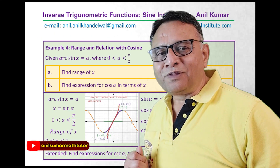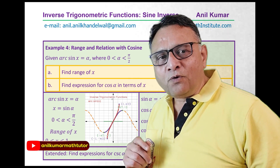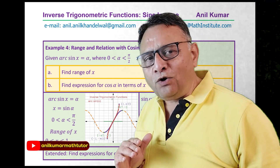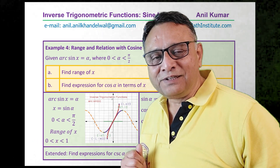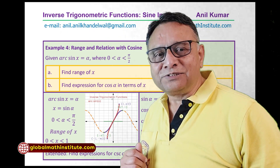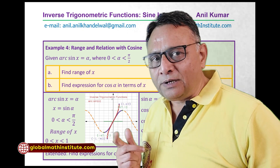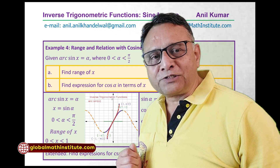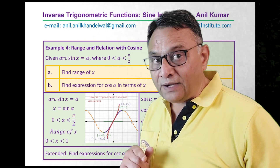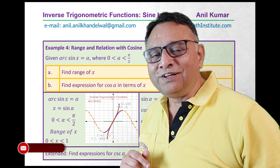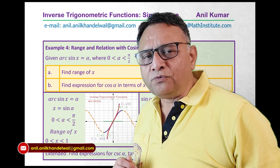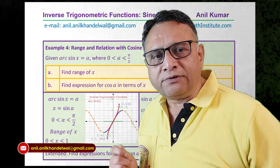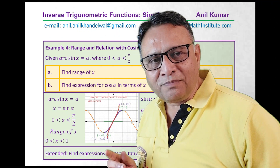In this example you saw that if we know sine inverse of x, we can find the value of cosine in terms of x. You could use either the trigonometric identity sine squared x plus cosine squared x equals 1, or the triangle method. The triangle method is versatile and can be used very easily for any trigonometric function whenever we are talking about its inverse.